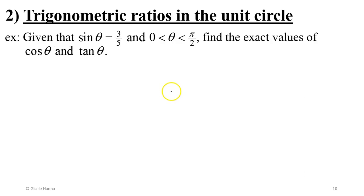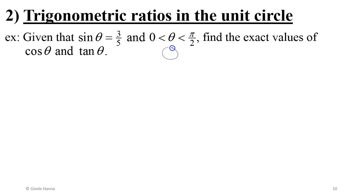Moving to an example: given that sin θ = 3/5 and θ is between 0 and π/2. Remember, π corresponds to 180 degrees, so π/2 is 90 degrees. This means θ falls in quadrant 1.